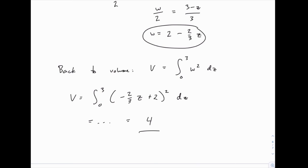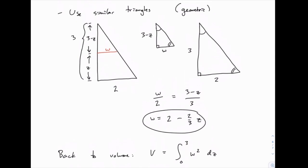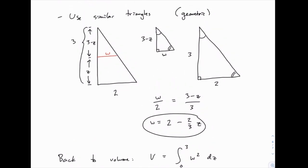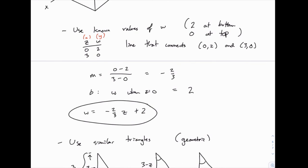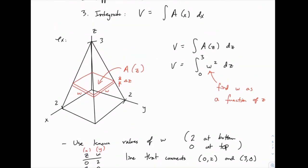So the key to this problem, really the hard part that we had to get through, was calculating the width of these cross-sectional slices as a function of z. And that's consistent with a lot of these. Finding that area function is the hard part.